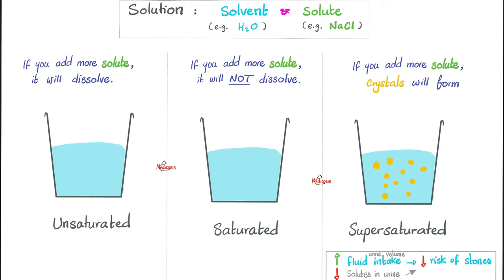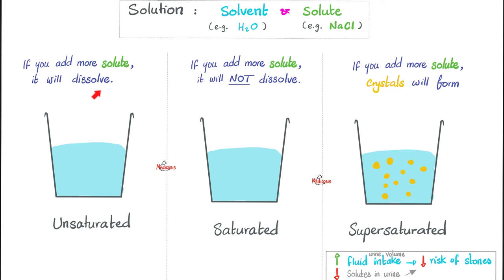Back to basics. Let's talk about chemistry. Remember the story of a solution? We have a solvent and a solute — for example, the solvent is water and the solute is sodium chloride, salt in water. In a solution we have more solvent than solute. We have three types: unsaturated, saturated, and supersaturated. Keep adding more solute — if it keeps dissolving, the solution is unsaturated. If adding more salt won't dissolve, it's saturated — it can't take in more. If you add more solute and crystals form, it's supersaturated.